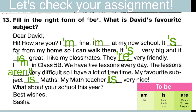Но если много свободного времени, значит мы должны поставить отрицание. Предметы не очень трудные. The lessons aren't very difficult. My favorite subject is math. Предмет один, речь идёт о местоимении it, поэтому выбираем is. My math teacher is very nice. Речь идёт об учителе, поэтому опять же is. What about your school this year? Best wishes, Саша.